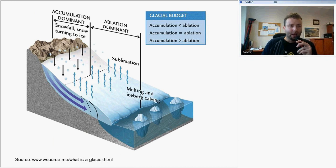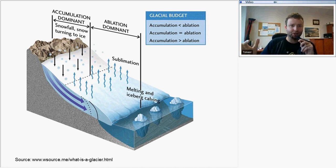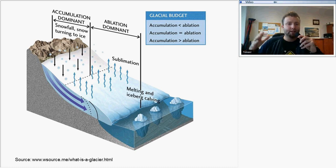If accumulation is dominant — meaning the accumulation zone is bigger than the ablation zone — then the glacier will have a positive mass balance. That means the glacier grows and becomes bigger and bigger.